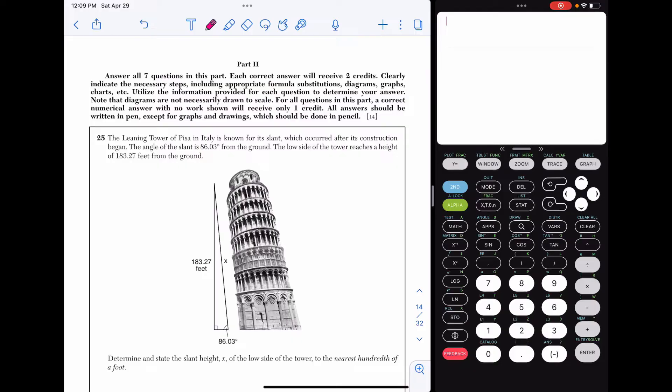Question 25. The Leaning Tower of Pisa in Italy is known for its slant, which occurred after its construction began. The angle of the slant is 86.03 degrees from the ground. The low side of the tower reaches a height of 183.27 feet from the ground. Determine and state the slant height, x, of the low side of the tower to the nearest hundredth of a foot.